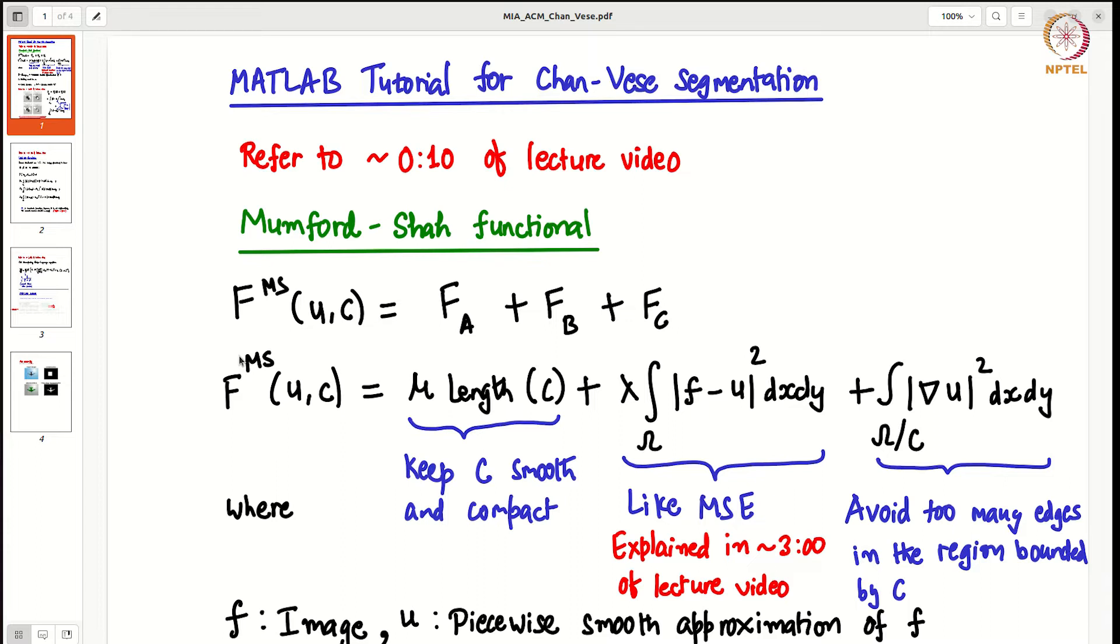The functional is called Mumford-Shah functional and its expression is shown on your screen. It has three terms: FA, FB, FC.